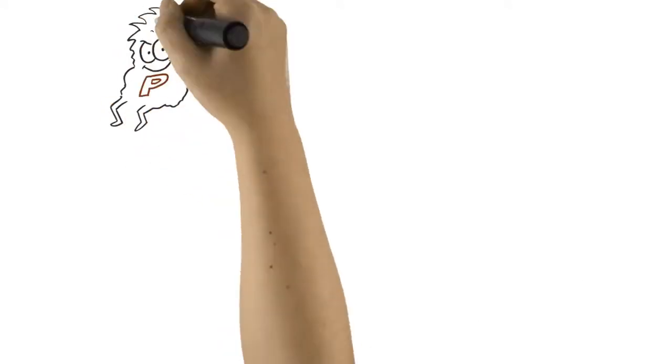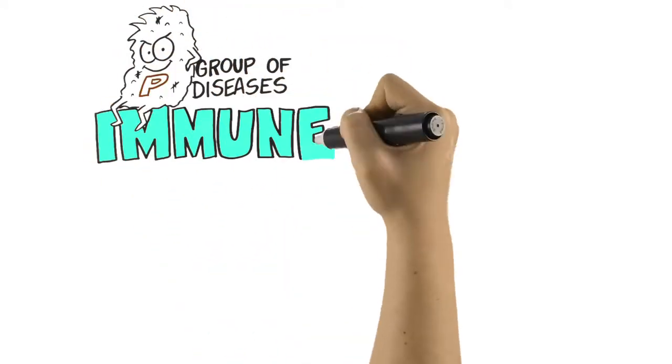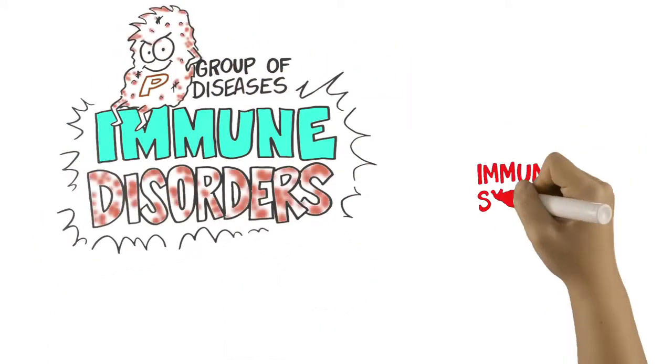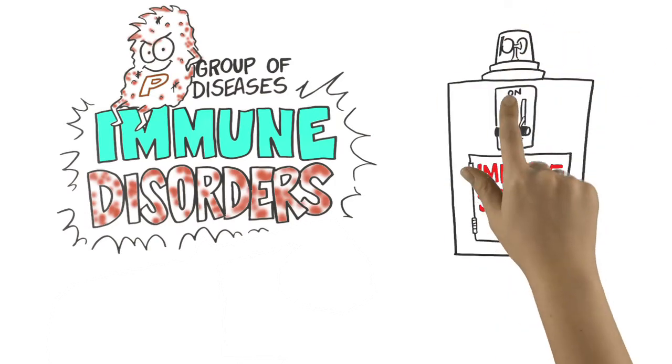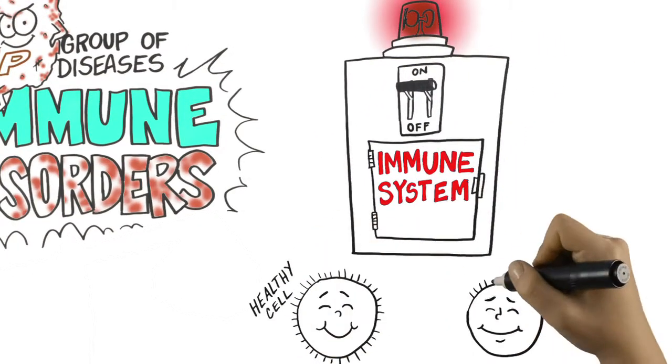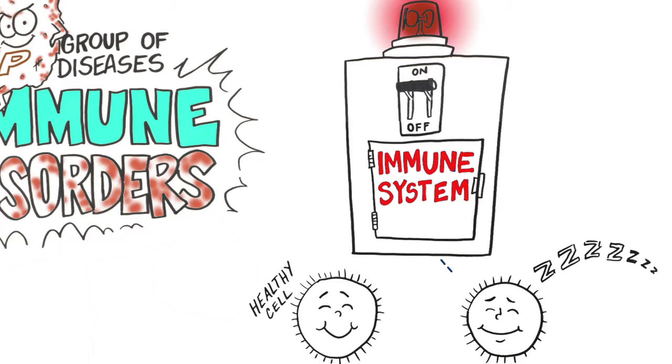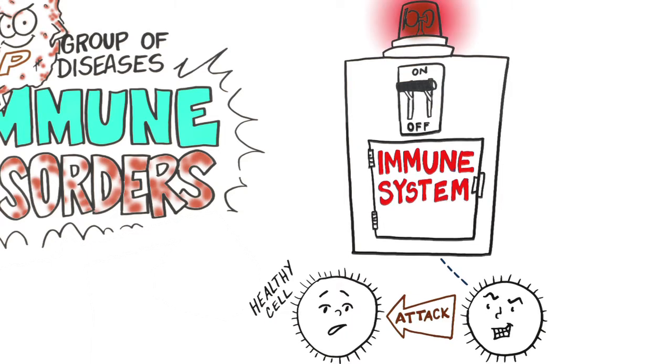In fact, psoriasis is one of a group of diseases called immune disorders. That means there's an imbalance in my immune system. The system that's supposed to keep me healthy mistakenly sends out wrong signals to other cells, alerting them to attack the enemy, a phantom germ. But really, my body is just fighting me.